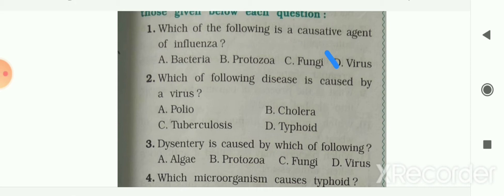Next question: which of the following disease is caused by a virus? Options are polio, cholera, tuberculosis, or typhoid. Your answer is polio, option A. Polio is a disease caused by a virus. The next: dysentery is caused by which of the following?